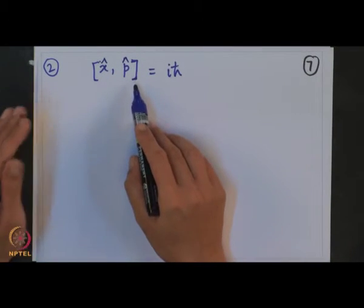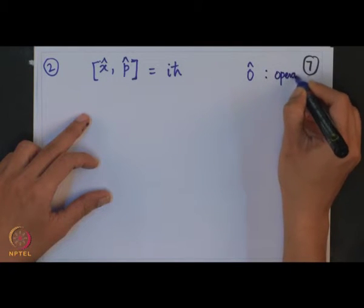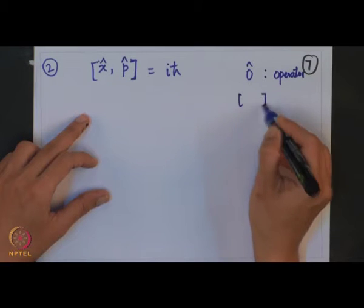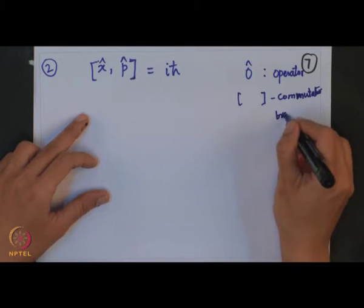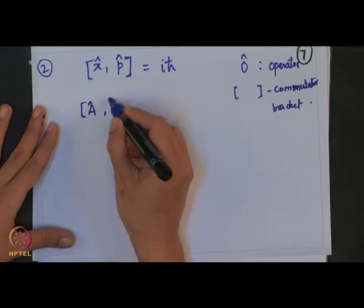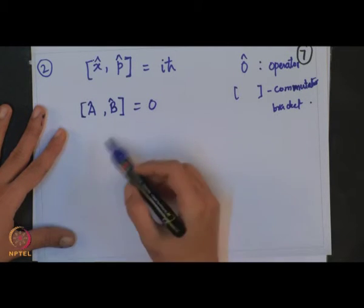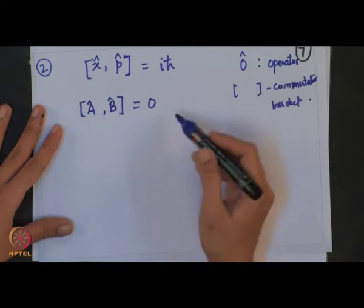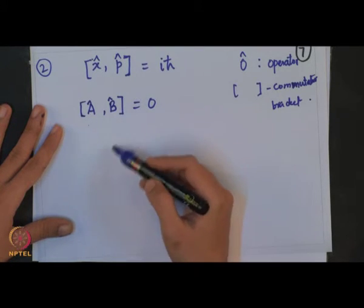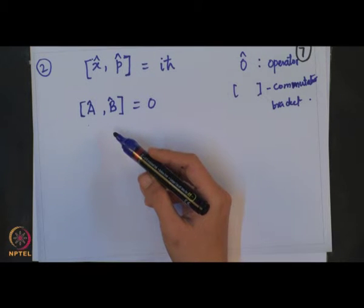Where x and p are the operators — this is called the commutator bracket. You will see in coming lectures why we check whether 2 operators commute or not. When 2 operators commute they form a simultaneous eigenket, so the measurement of A does not affect the measurement of B.